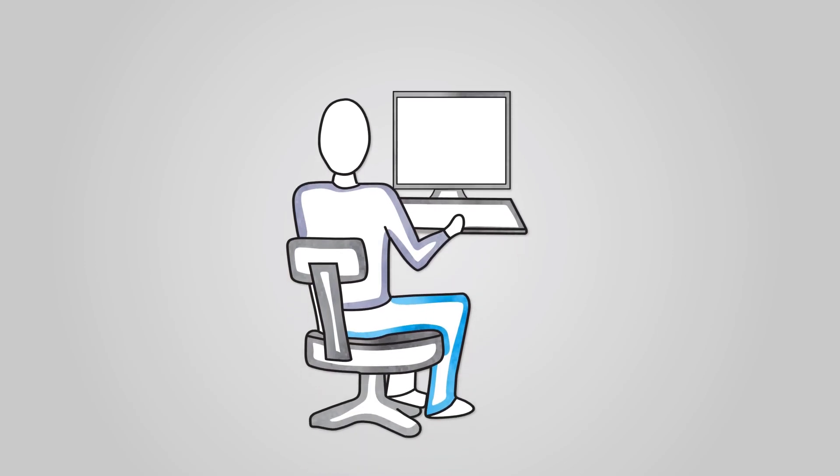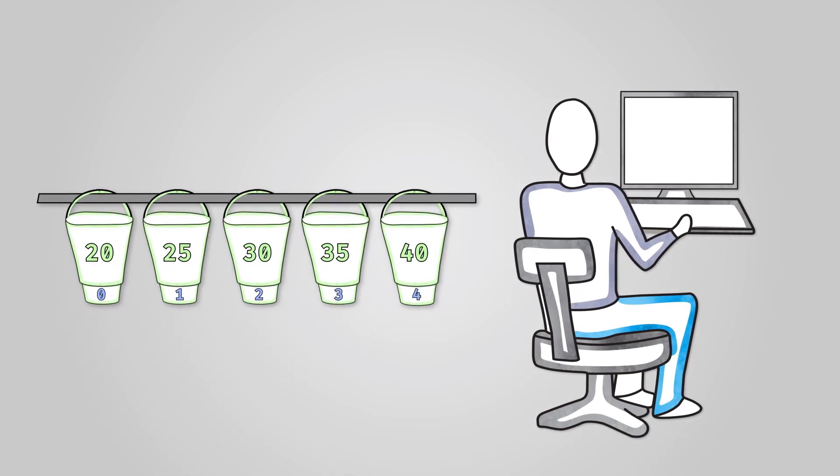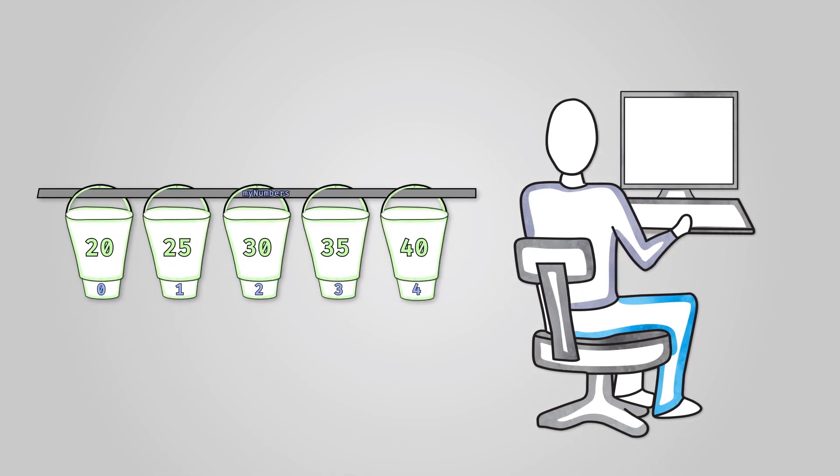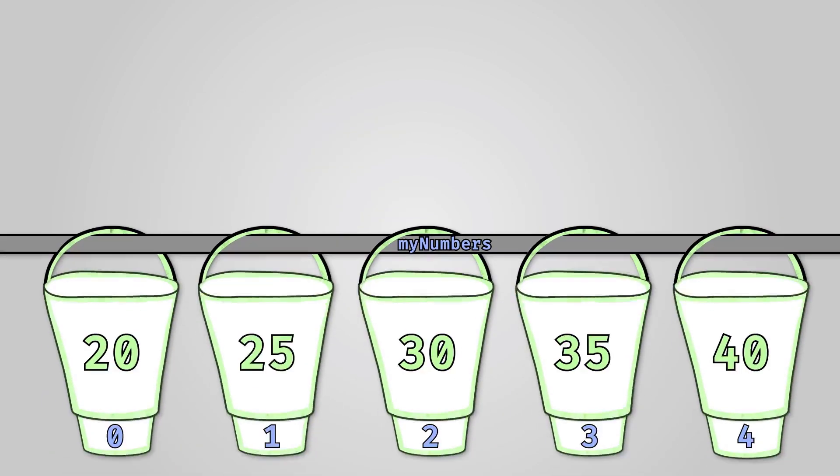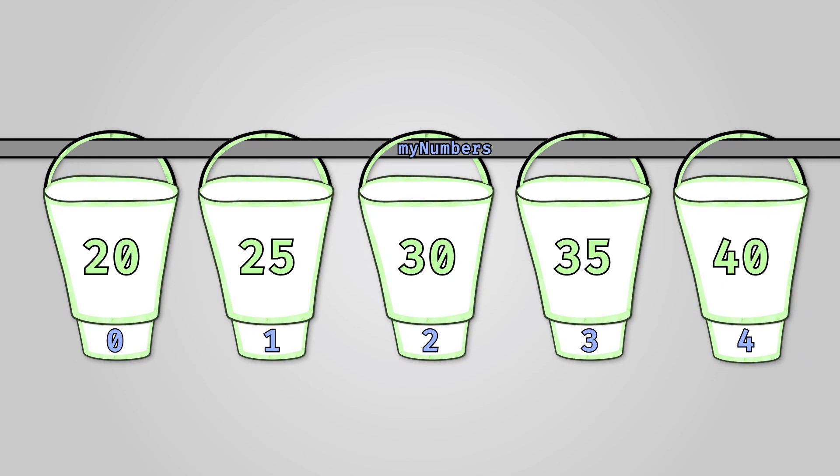One-dimensional arrays are created in a manner very similar to creating variables. We need to give our array a name. We need to give our array a data type, though OCR and Python do this automatically. We then also need to say how many elements we are going to need. In the following examples we are going to create an array called myNumbers to store the integers 20, 25, 30, 35, and 40.